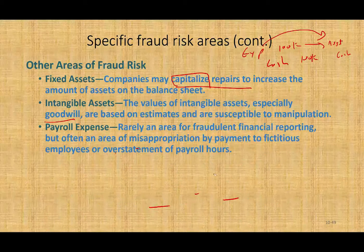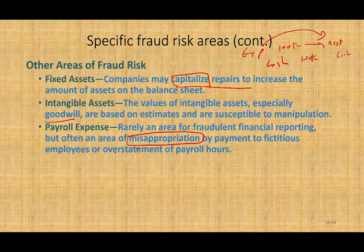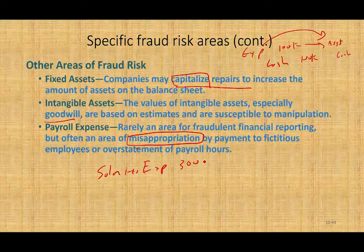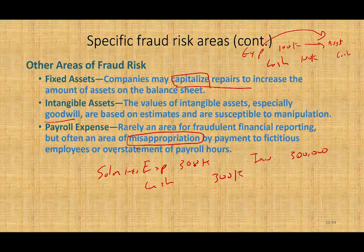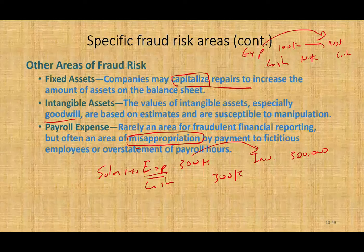Payroll expense is rarely an area of fraudulent financial reporting, but usually involves misappropriation of payments. Somebody might add a ghost employee to the payroll, or add their spouses, friends, or relatives to overstate payroll. Another area of payroll fraud is when salary expense — say $300,000 — should be debited as an expense, but instead companies treat it as an asset. For example, in manufacturing, salary expense becomes part of work-in-process inventory. Rather than expensing it, they treat it as an asset — that's another area where payroll fraud can occur.